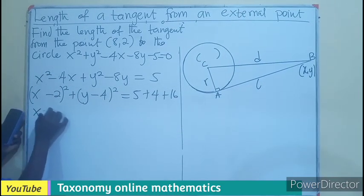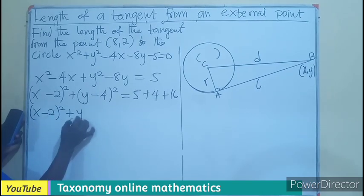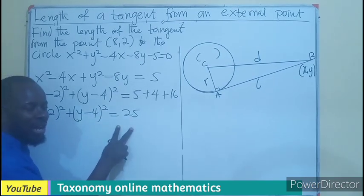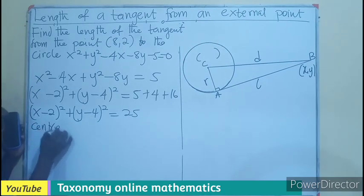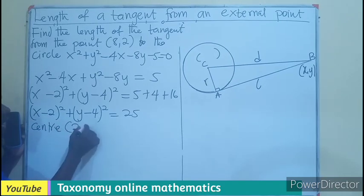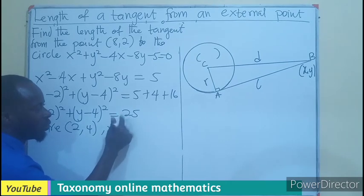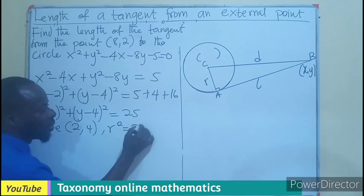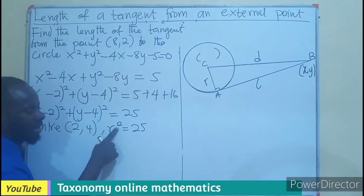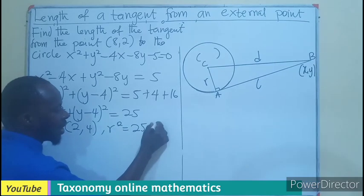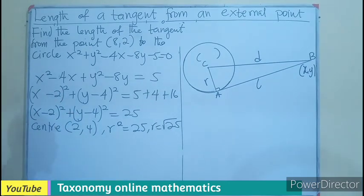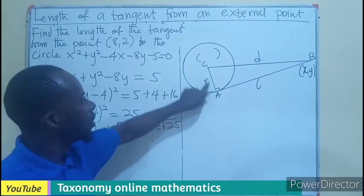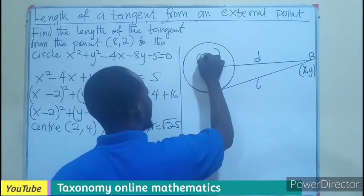We are going to have x minus 2 all squared plus y minus 4 all squared equals 25. Comparing this to the standard equation, our center A,B will be 2 and 4. And our radius, the whole of this represents R squared. So R squared is the same as 25. If I find the square root of this, your R will be the square root of 25. If you find the square root of this, I believe you will get 5. So the radius is found, the center is also found, 2, 4.